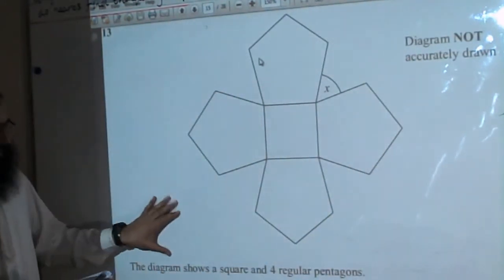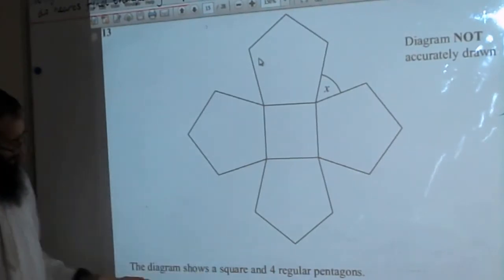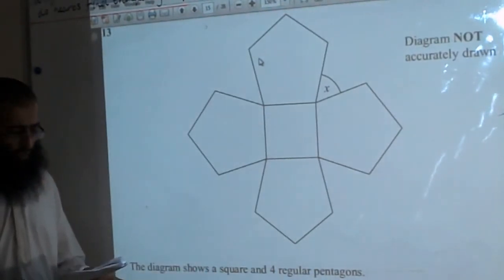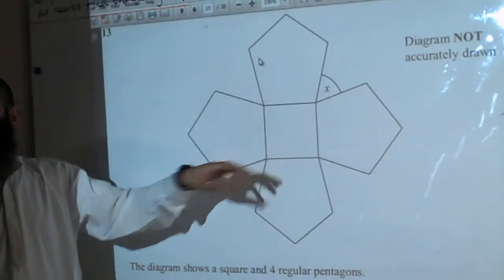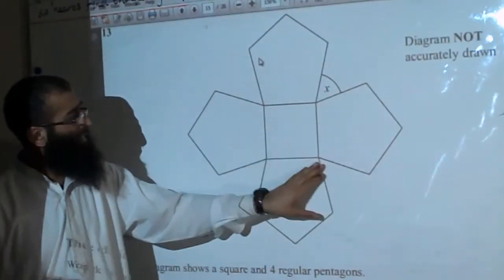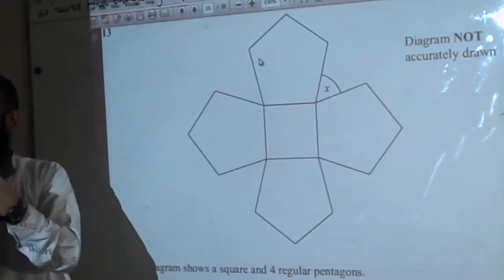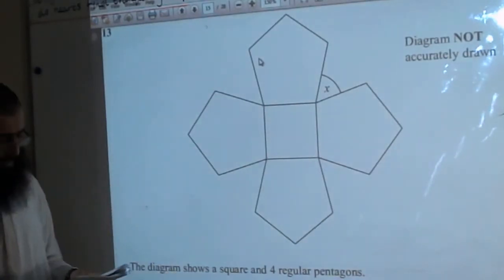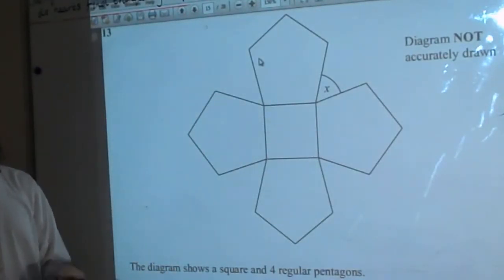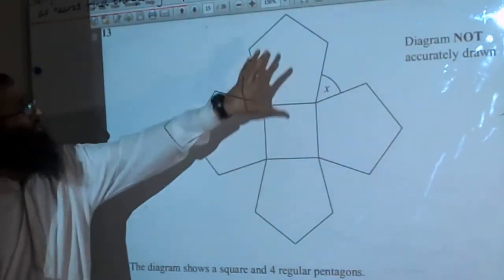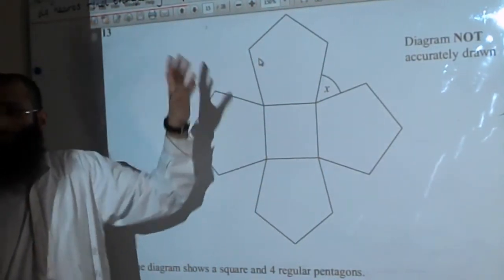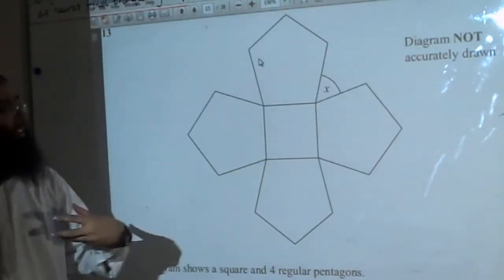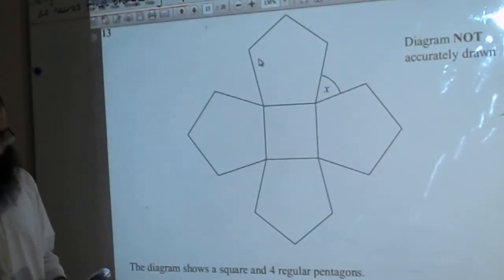The diagram shows a square and 4 regular pentagons. A square is a regular shape — all sides are the same length, all angles are the same. Regular pentagons also have all lengths exactly the same and all internal angles the same, so it is not an irregular one.